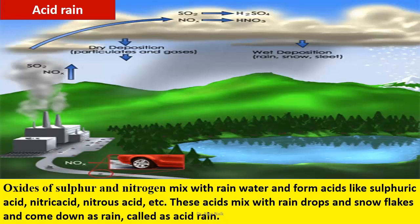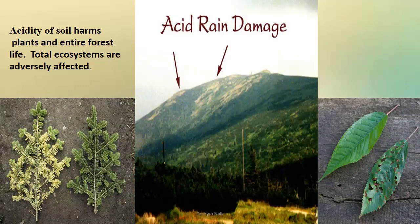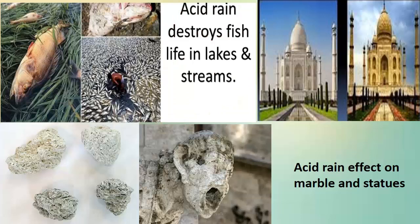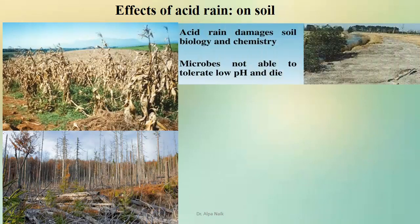The composition of our rain is also changed. The acidity of the soil harms plants and entire forest life — total ecosystems are adversely affected. Acid rain in water bodies destroys fish life in lakes and streams. It also corrodes buildings, statues, bridges and sculptures. You can see the Taj Mahal — because of acid rain and air pollution, the marble effect has changed due to corrosion. Even natural minerals get corroded, and the soil biology and chemistry are damaged. Microbes are not able to tolerate the low pH and die.